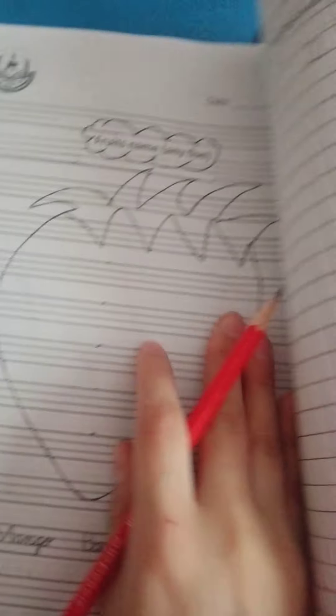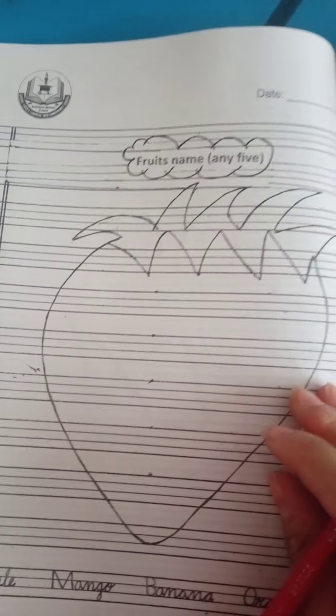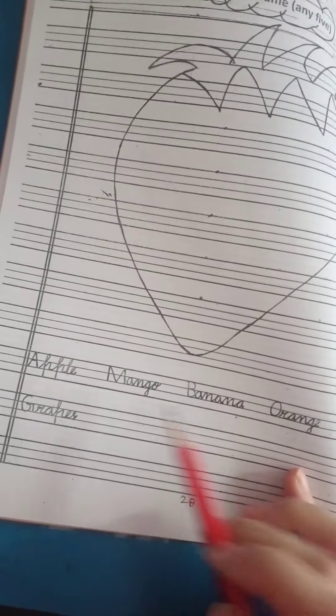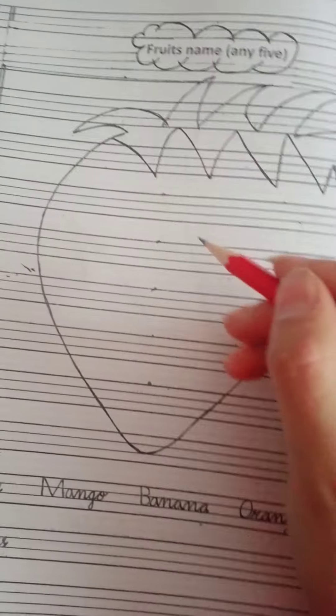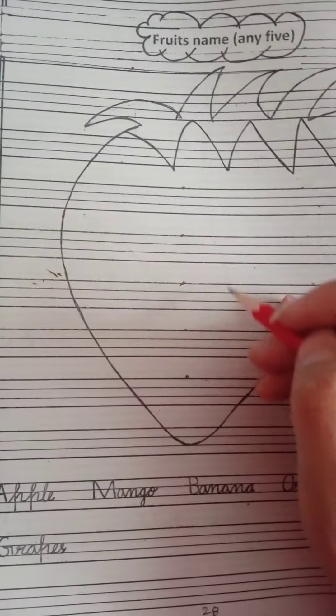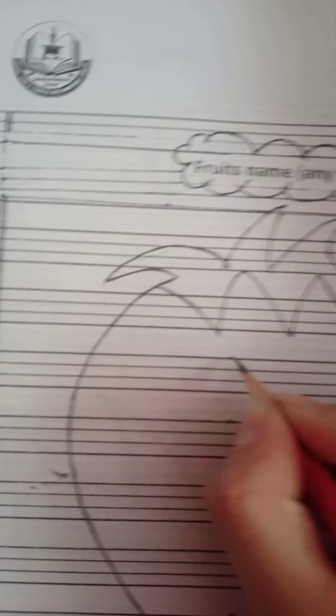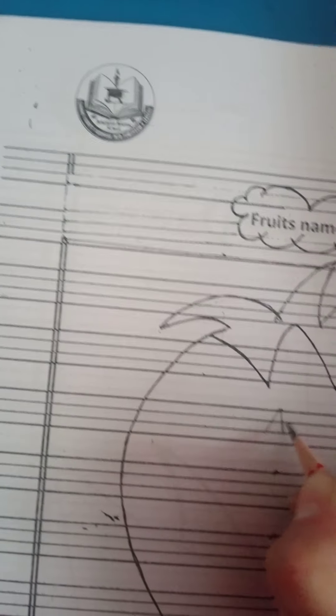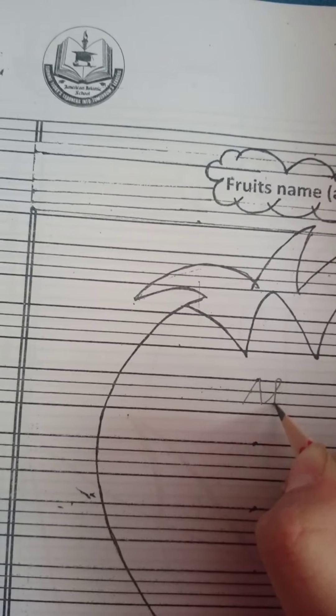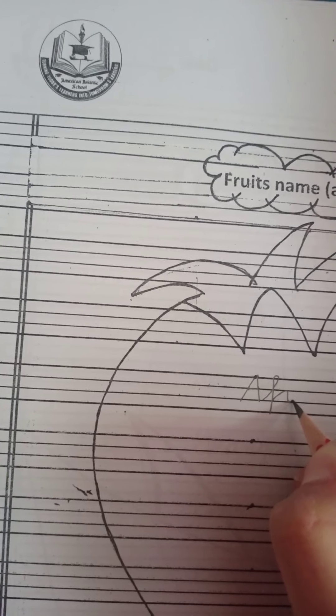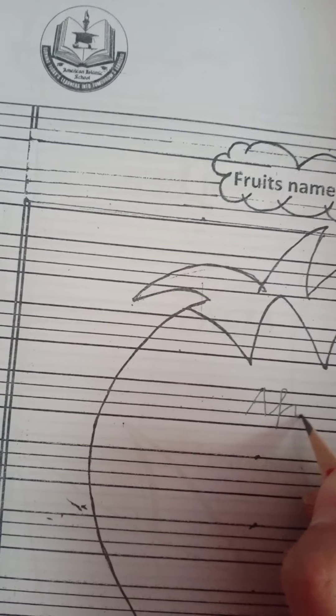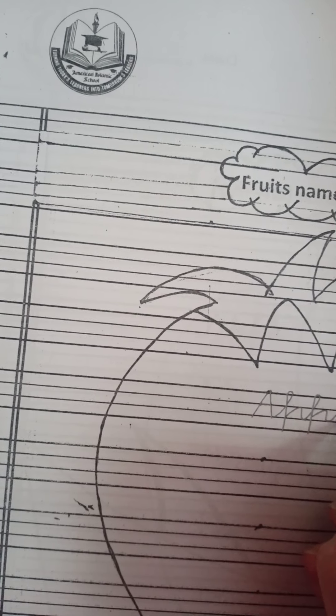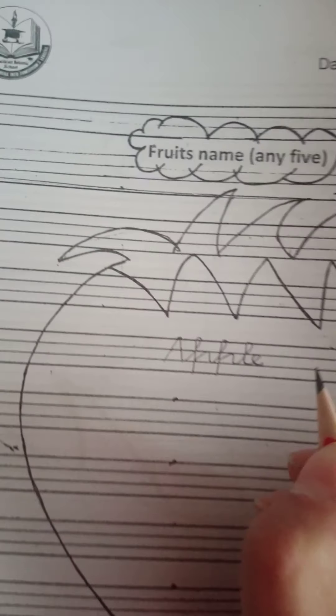Here is the last page. Fruits name. You have to write: apple, mango, banana, orange, grapes, strawberry. Dots are mentioned. You have to write on top of the dots. First I will show you. First letter capital A, then cursive writing: unstraight line, straight, unstraight line, straight. Apple: A, double P, L, E. Apple. In cursive writing.